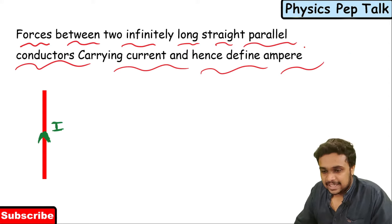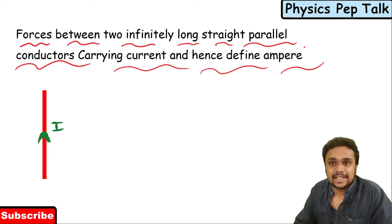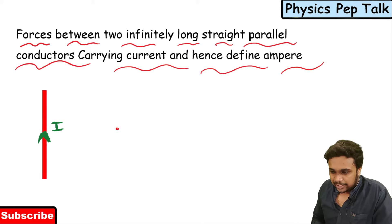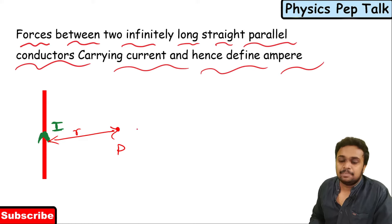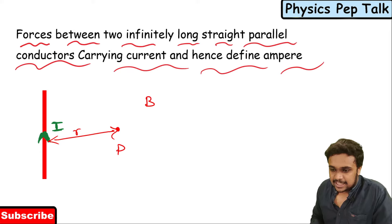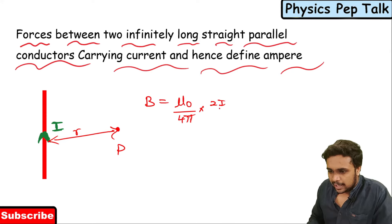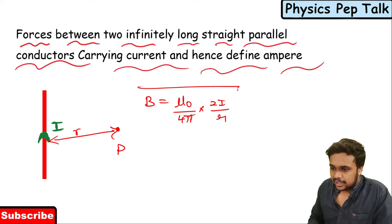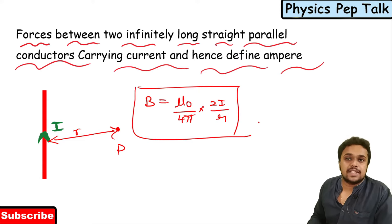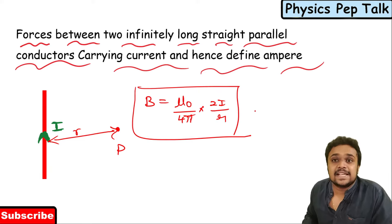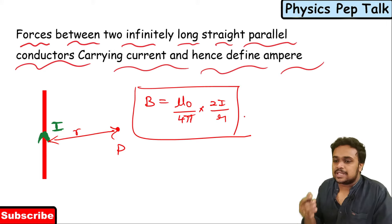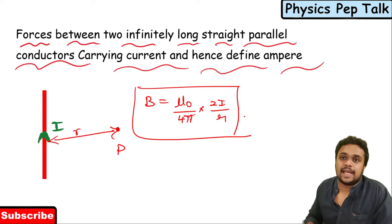If I have a conductor carrying a current I, and if I have a point P which is at a distance R from this conductor, then the magnetic field at point P will be equal to μ0/4π × 2I/R. This equation, derived using Ampere's circuit law, is used for a straight parallel conductor carrying current.